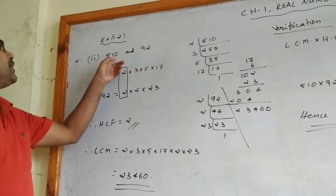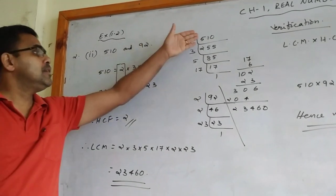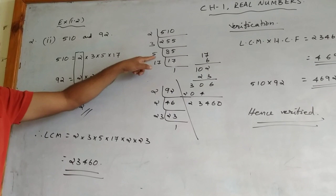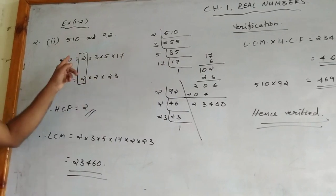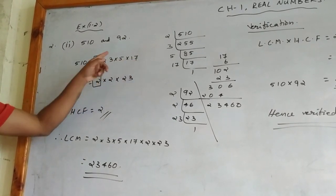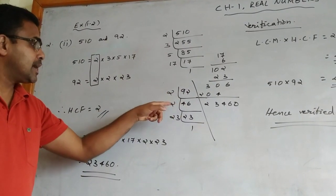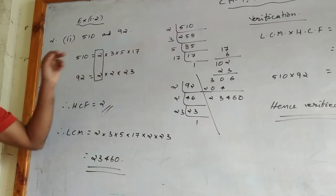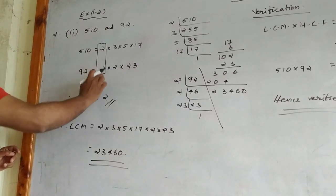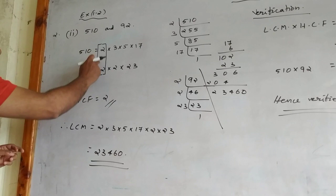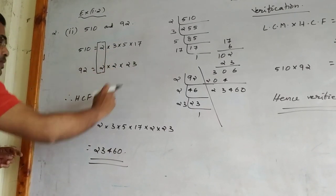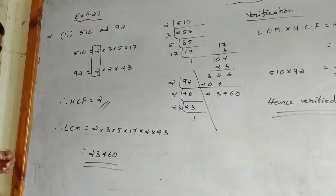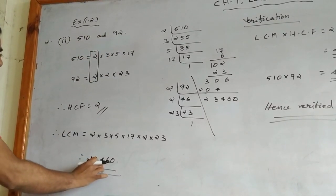Next question: 510 and 92. Prime factorization of 510: dividing by 2 gives 255, dividing 255 by 3 gives 85, dividing 85 by 5 gives 17, and 17 is prime. So 510 = 2 × 3 × 5 × 17. For 92: dividing by 2 gives 46, dividing 46 by 2 gives 23, and 23 is prime. So 92 = 2 × 2 × 23. HCF is the common factor: only 2 appears in both, so HCF = 2. LCM = 2 × 3 × 5 × 17 × 2 × 23 = 23,460.